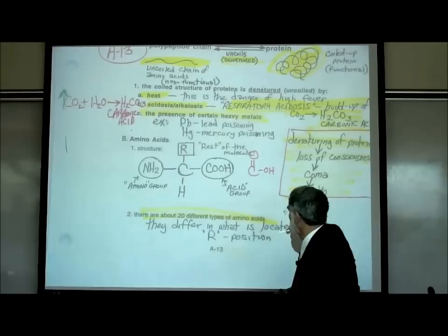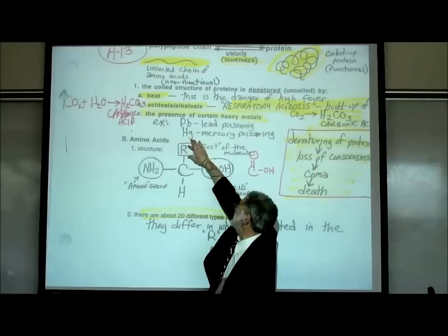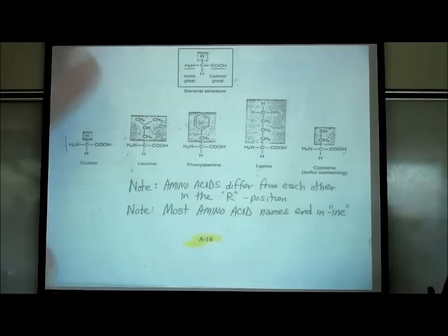The top position might be just a hydrogen, it might be an OH, or something more complex. There are 20 different types of amino acids based upon what's attached in this R position. We actually looked at that briefly last time on page A14.